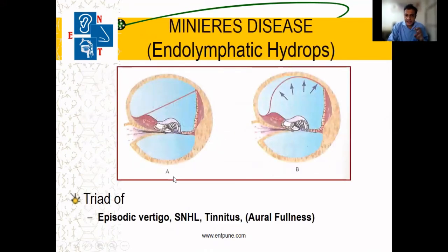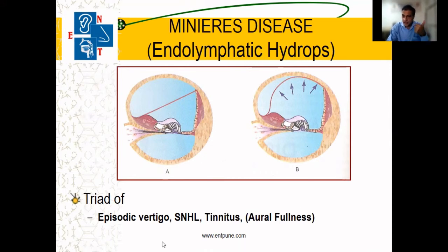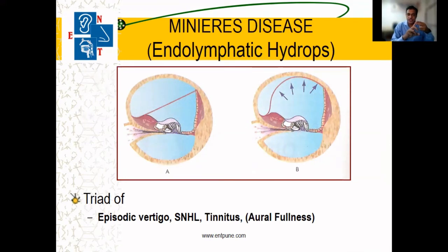Coming to Meniere's disease — it is mainly a triad of three symptoms. This is the only ear condition with vertigo where the patient will also have a hearing loss, a ringing sound in the ear, and will say that the ear feels blocked along with the vertigo. So: vertigo, reduced hearing, tinnitus, and a full or blocked sensation in the ear.